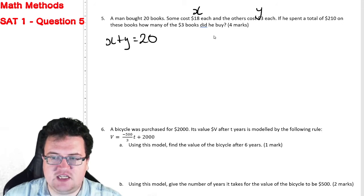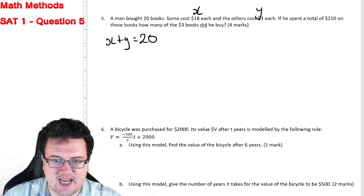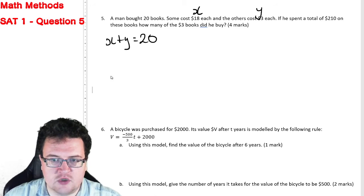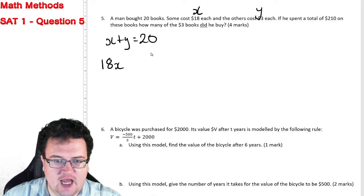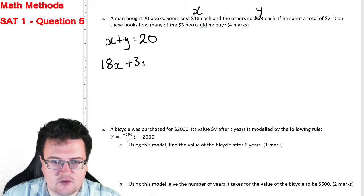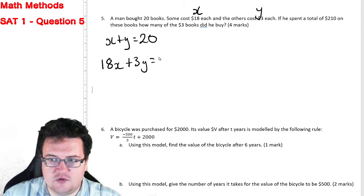Now, what we also know is that if he spent a total of $210, we can also create the equation 18X plus 3Y equals 210.